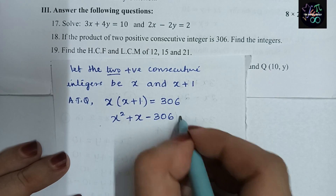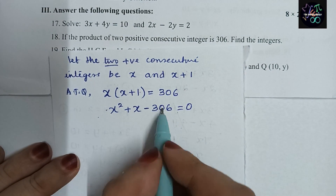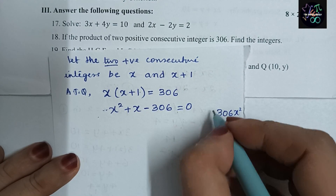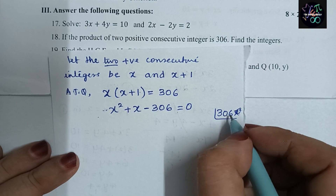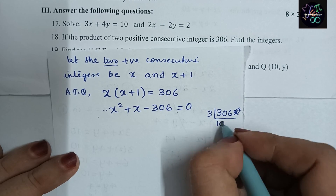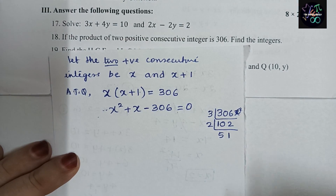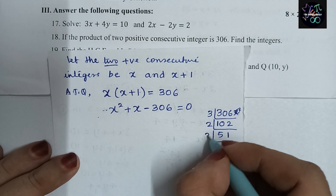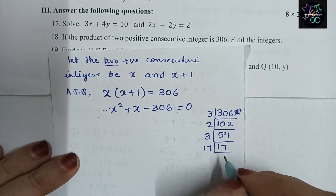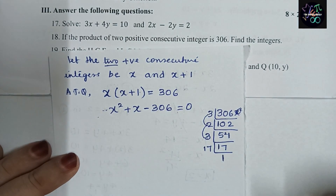Expanding: x² + x − 306 = 0. Now we need to factorize. We multiply the first and last coefficients: 1 × 306 = 306. We find the prime factors of 306: 306 = 2 × 3 × 3 × 17. We need two numbers that multiply to 306 and whose difference equals the middle coefficient 1. We get 18 and 17, since 18 × 17 = 306 and 18 − 17 = 1.